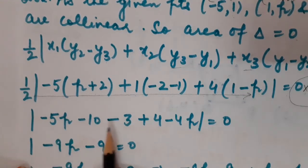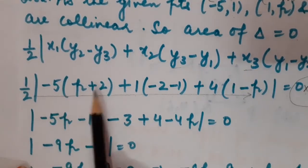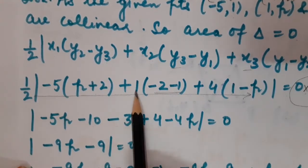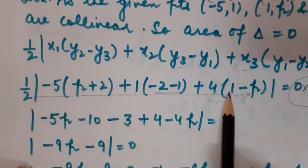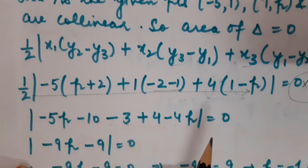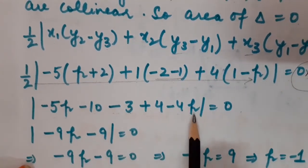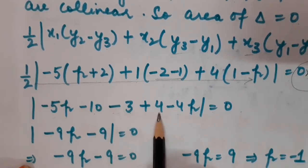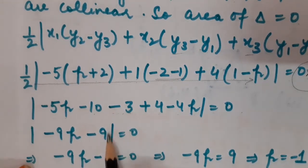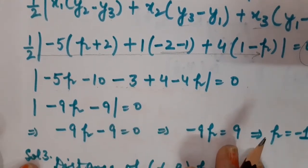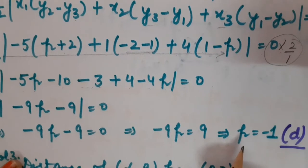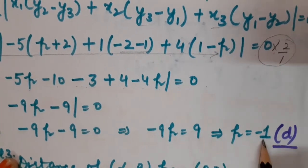So −5P − 4P gives −9P, and −10 + 4 − 3 gives −9. So −9P − 9 = 0, meaning −9P = 9, therefore P = −1, which is the right option, that is option number D.